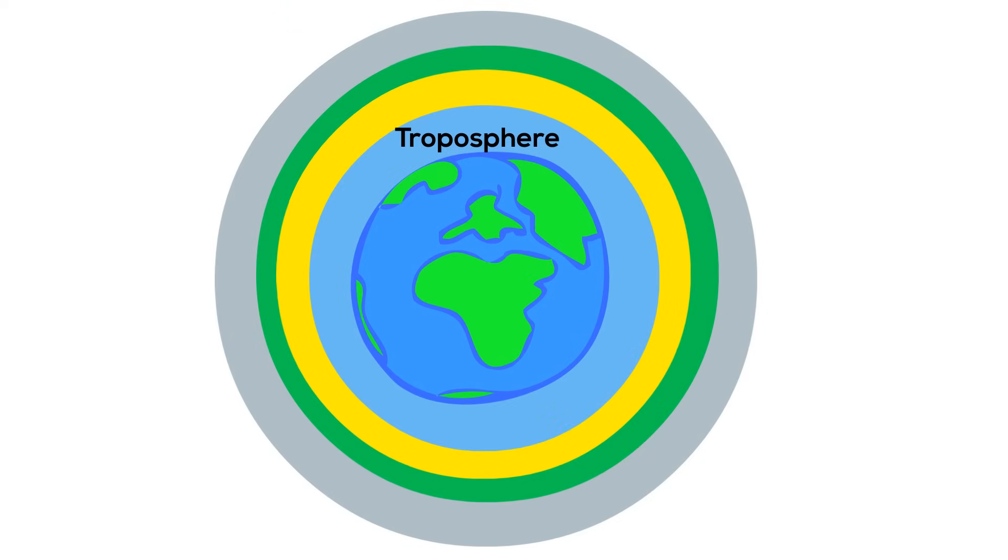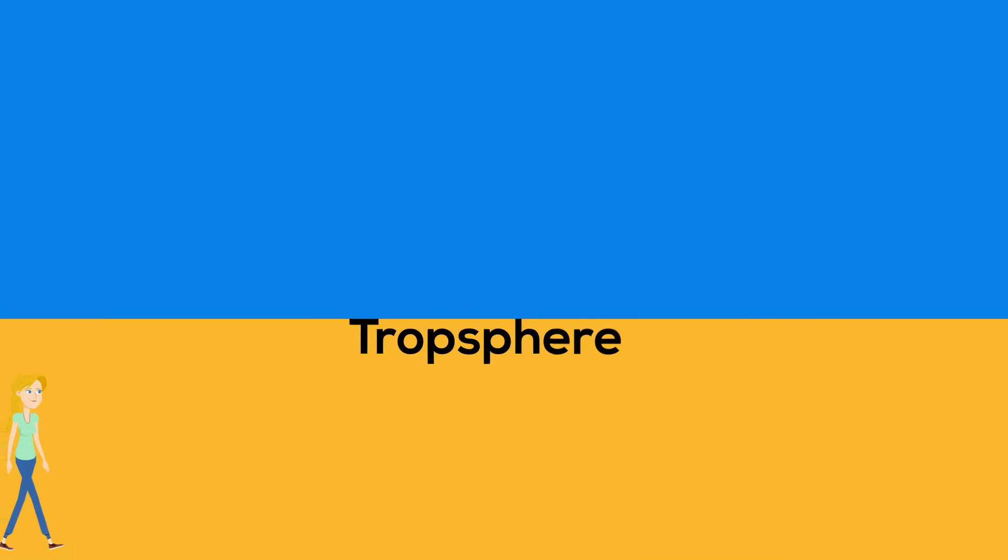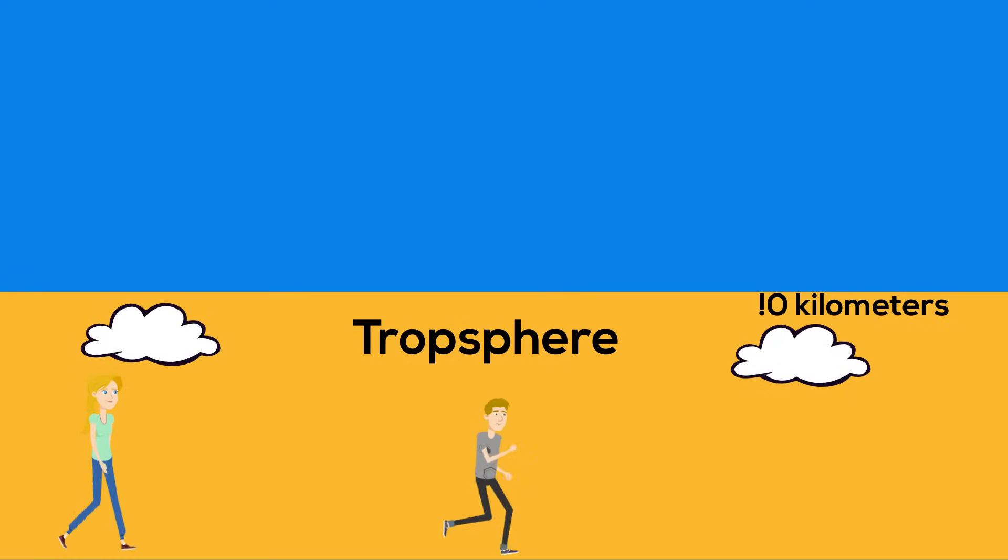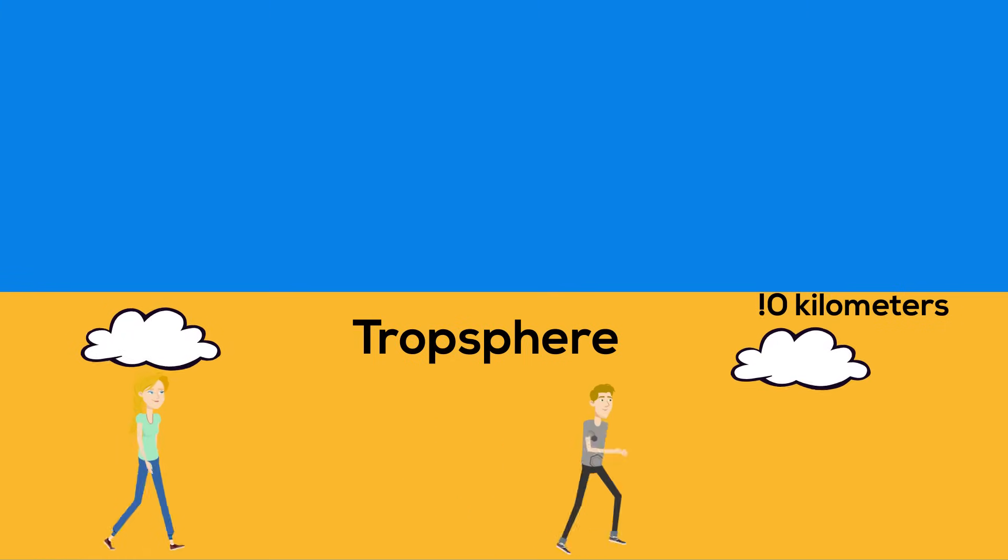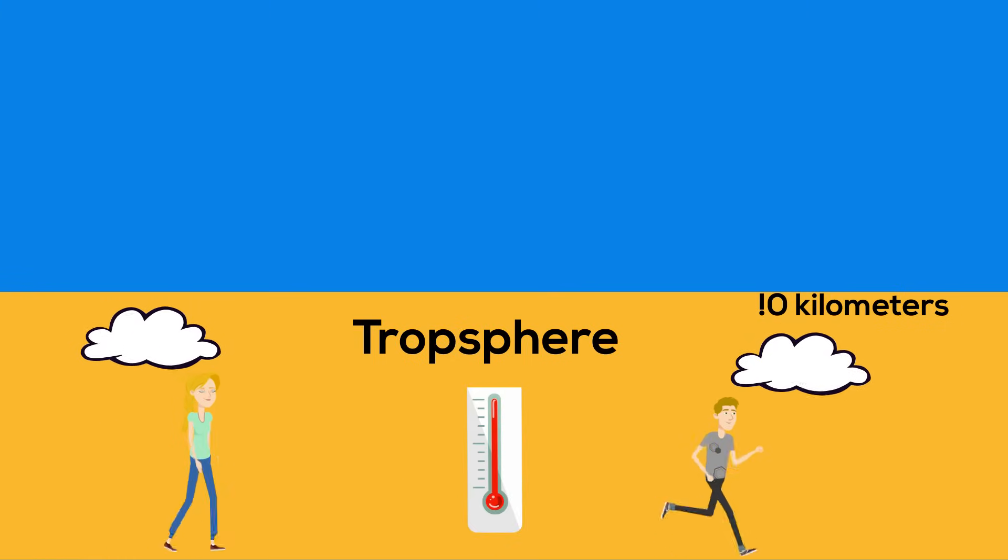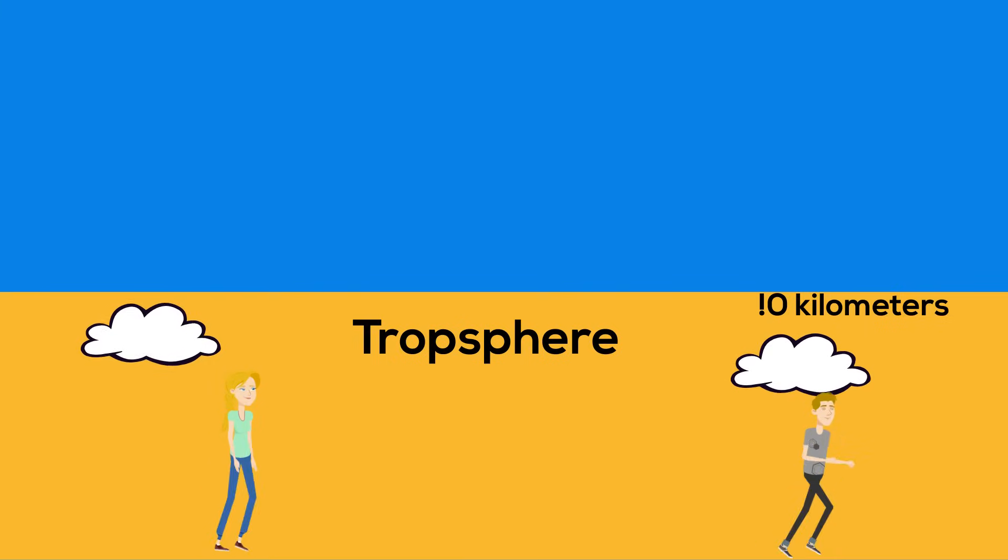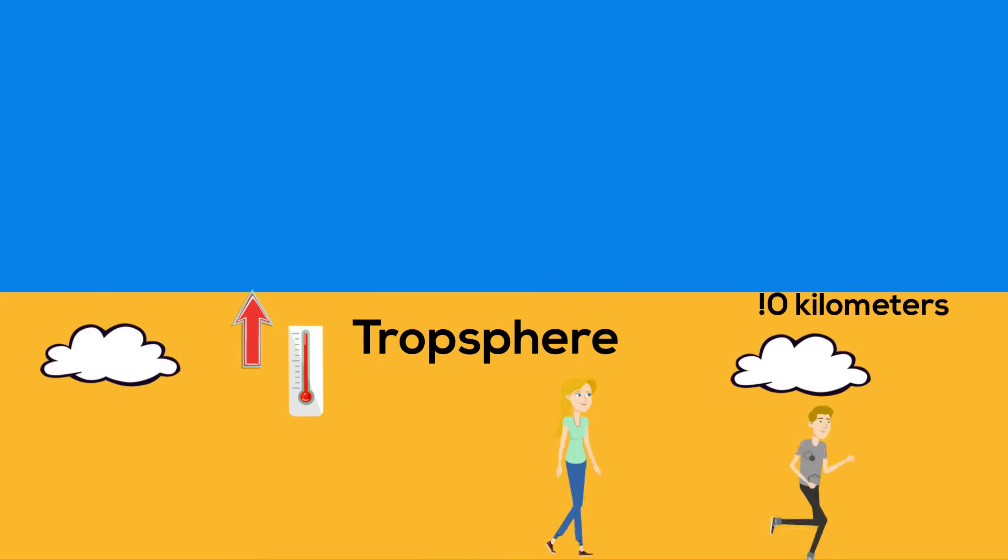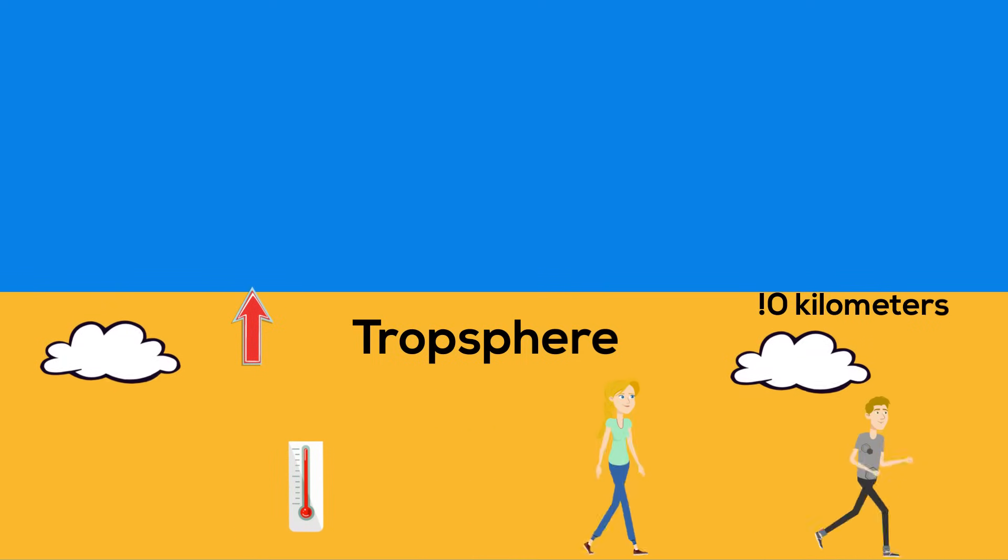The first layer is called the troposphere. It is the layer in which we live. This is the layer in which weather occurs. It extends from the ground to about 10 kilometers high. Temperatures change often in the troposphere from negative 20 degrees Celsius to 50 degrees Celsius, and as you get higher in the troposphere the temperatures get lower.